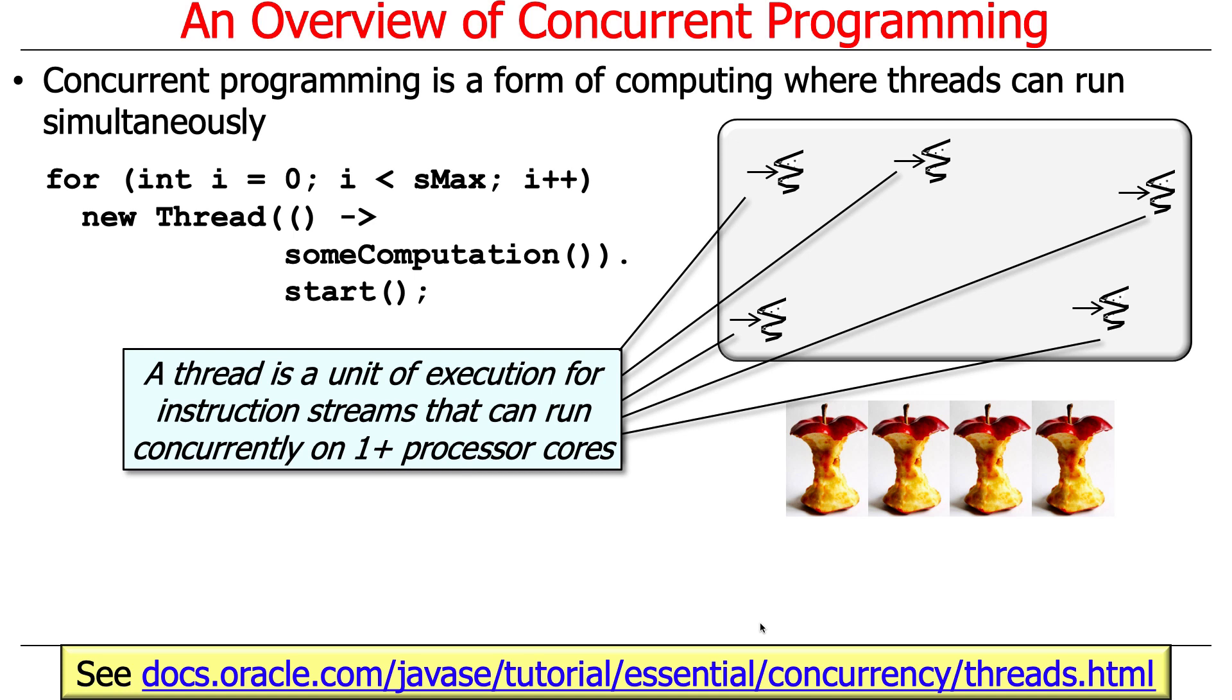Here's an example where we're going to spawn a bunch of threads. Let's say for sake of argument that we're going to loop for i equals zero, i less than s max, where s max is five. And so we're going to go ahead and create a new thread for each time through the loop. I'm going to represent threads with these funny little squiggles that look like a piece of thread with an arrow.